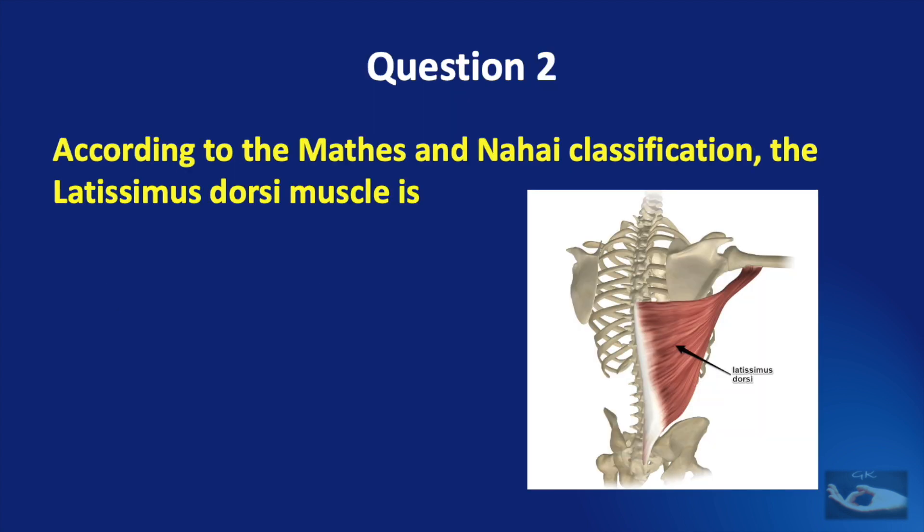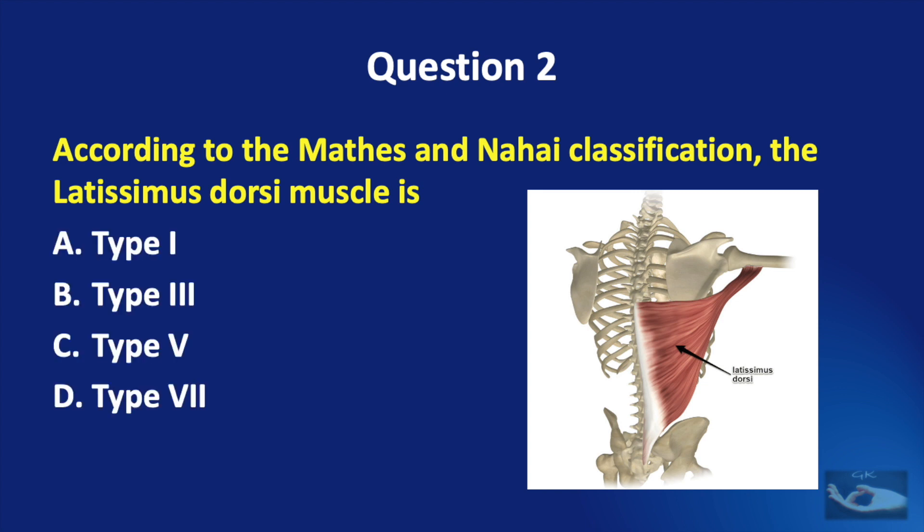Question No. 2. According to the Matheys and Nahai classification, the latissimus dorsi muscle is a Type 1 muscle, Type 3 muscle, Type 5 muscle, or Type 7 muscle?